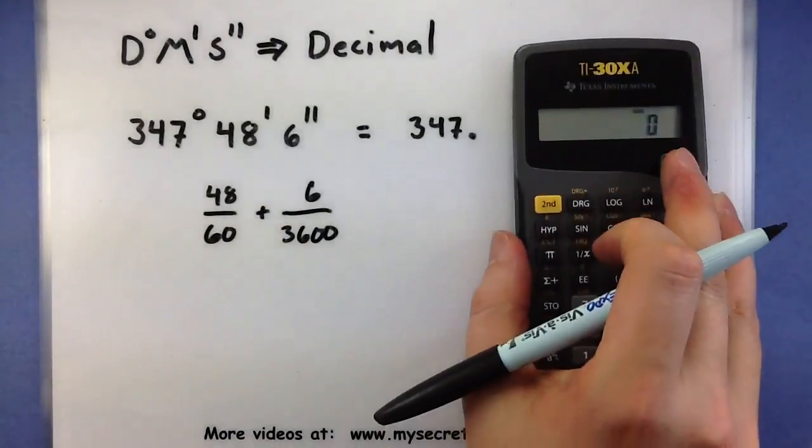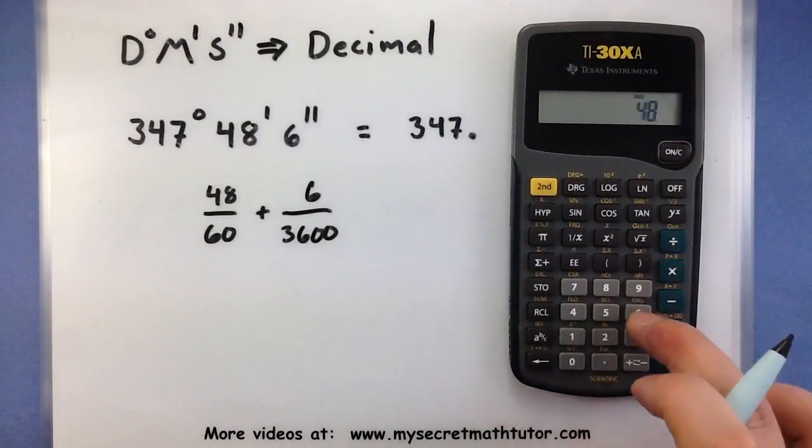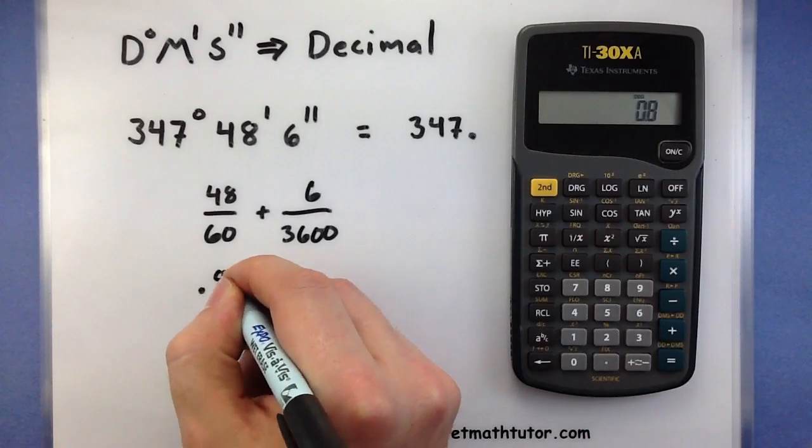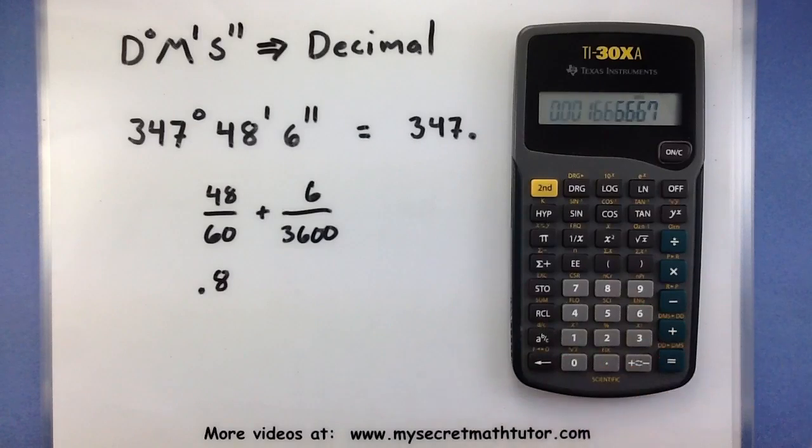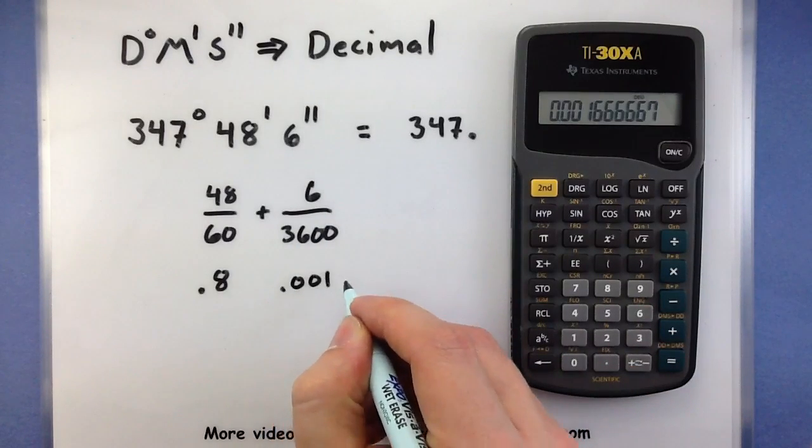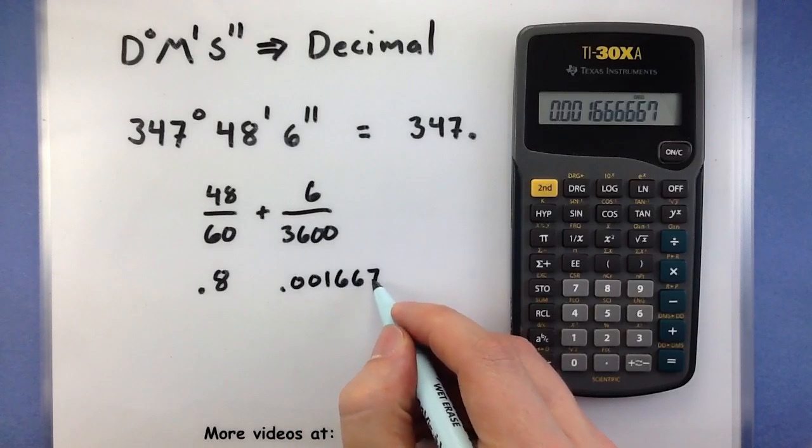It's okay to use the calculator for some of these to see what decimal you get. So here I have 0.8, and this looks like it's 0.001 and a whole bunch of 6's. I'm going to chop it off at just a few.